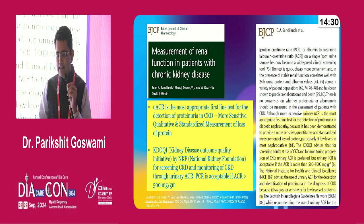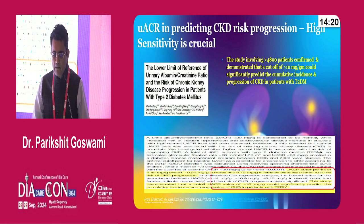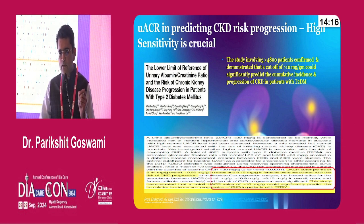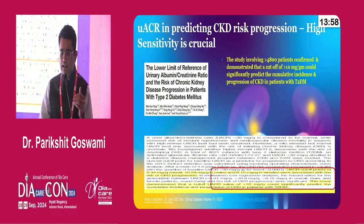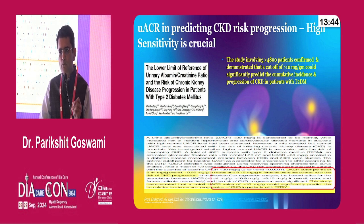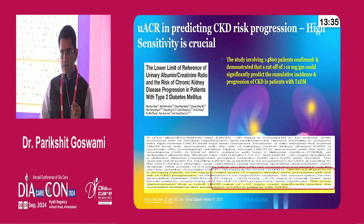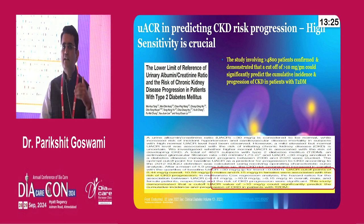Most guidelines suggest UACR is the most appropriate first-line test for detection of proteinuria in CKD. One study shows the lower limit of reference of urinary albumin-creatinine ratio and the risk of CKD progression in patients with type 2 diabetes — involving more than 4,800 patients — demonstrating that a cut-off of more than 10 mg/g would significantly predict the cumulative incidence and progression of CKD. This is the opportunity we need to catch early to prevent progression of chronic kidney disease — we don't have to wait until 30 or beyond 300.